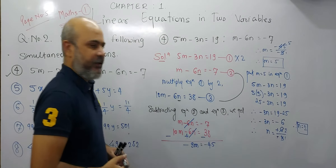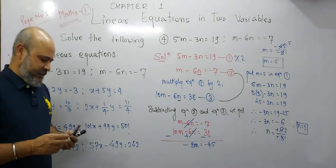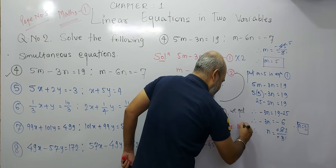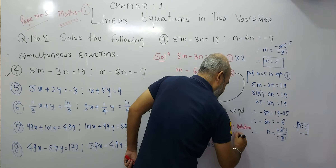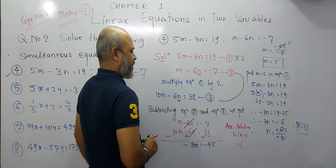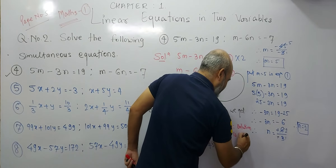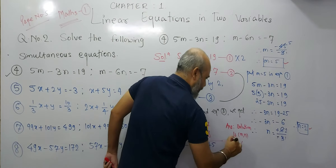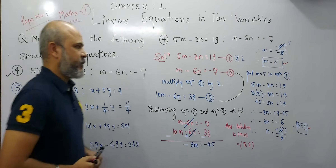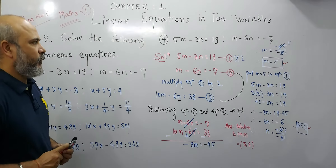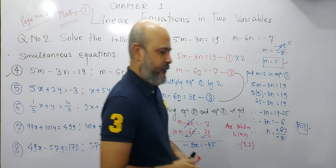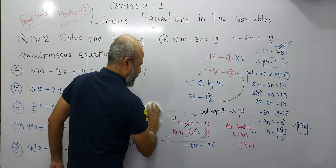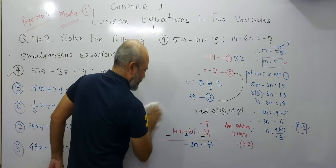You will get n equals 2. So what is the answer? We write the solution. The solution is that m and n — here the variables are m and n, not x and y — so the solution is m equals 5 and n equals 2. Write (5, 2). So this is the solution to question number 4. Now we will see the solution to question number 5. I will erase this part and move on to question number 5.